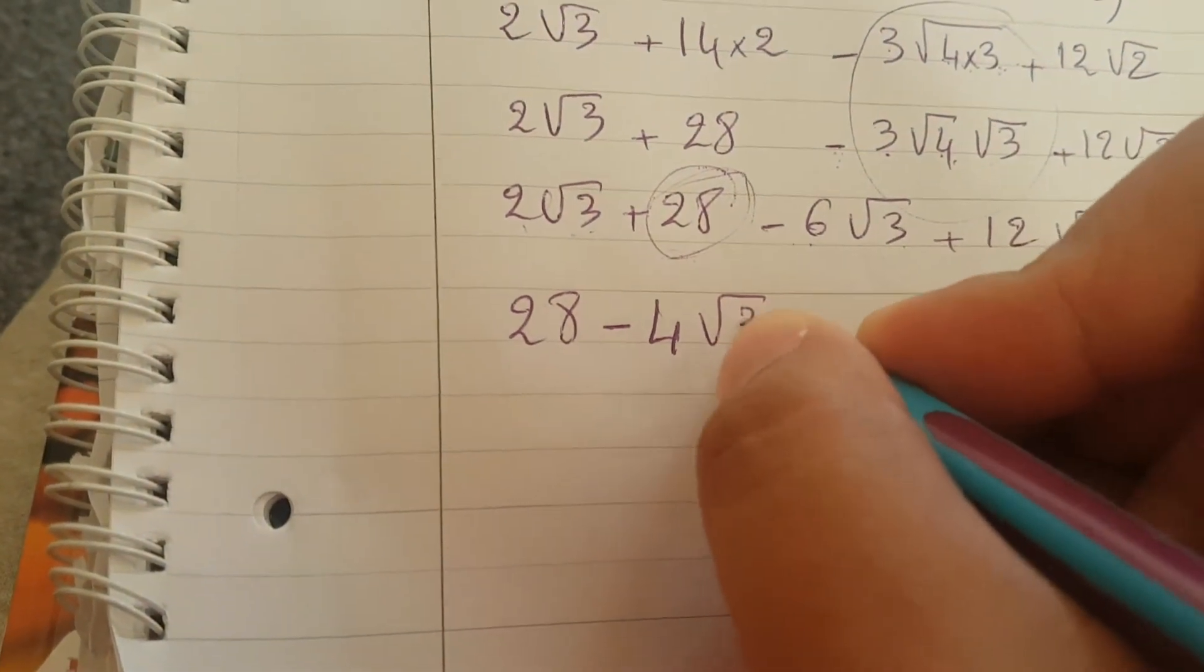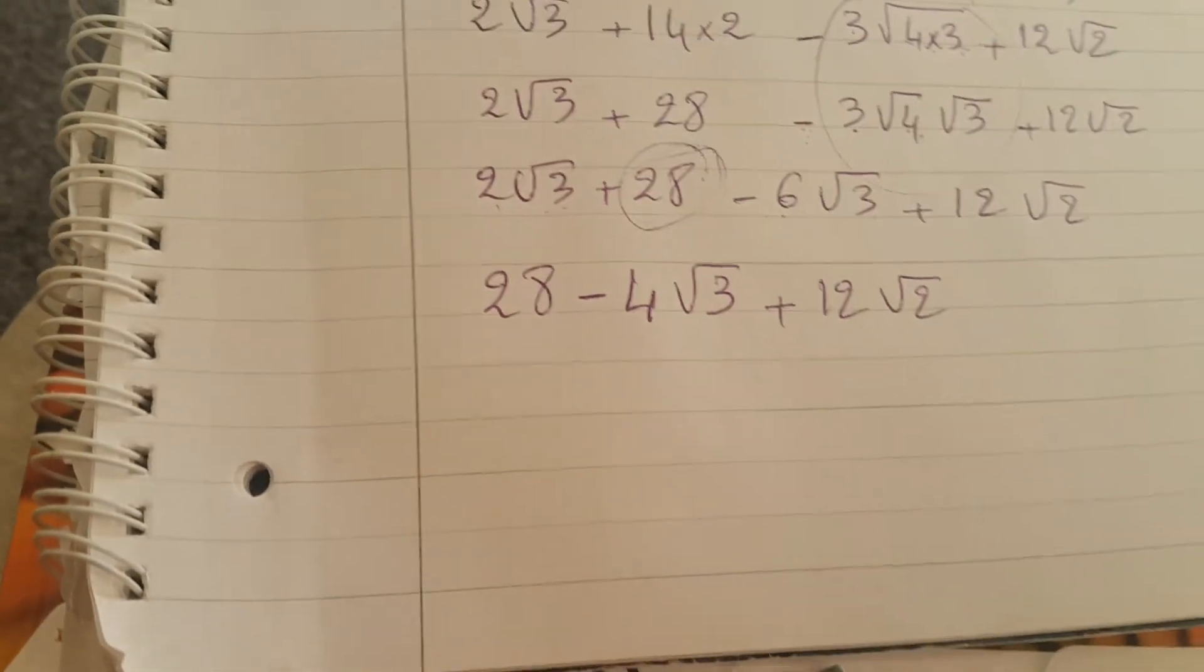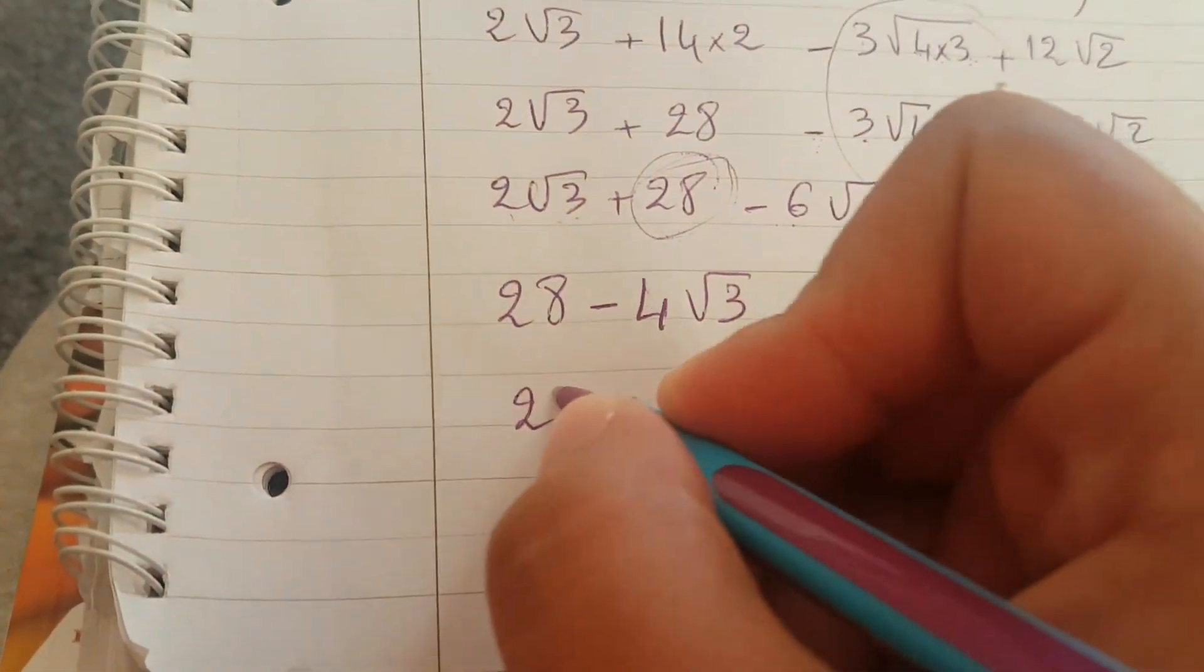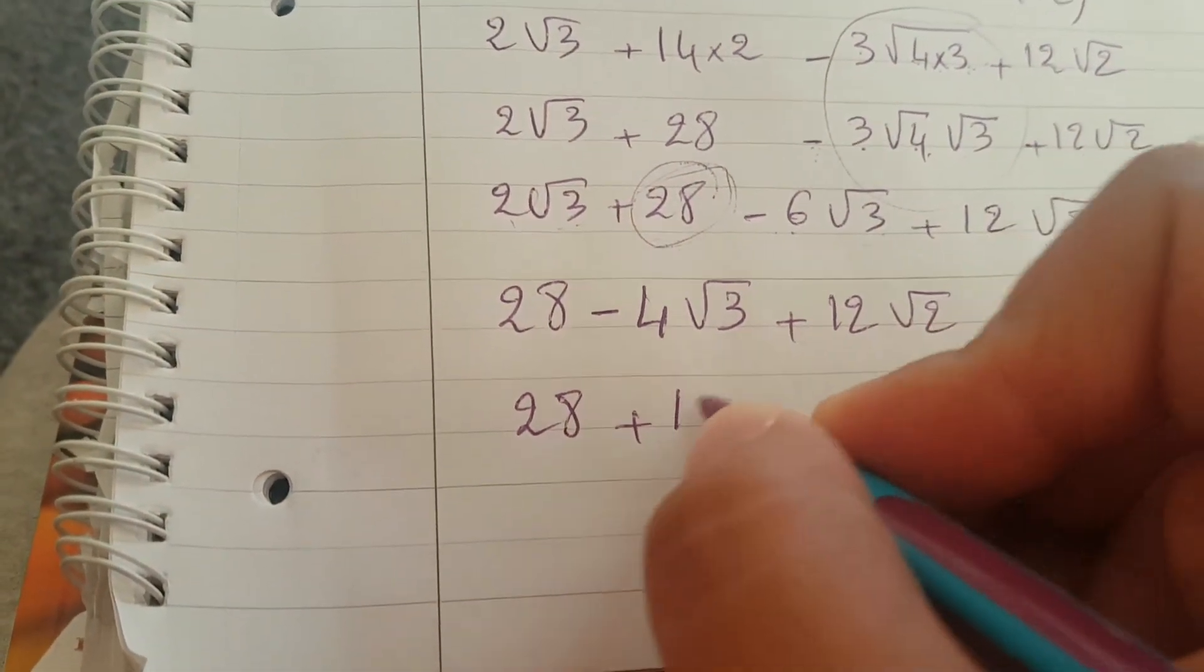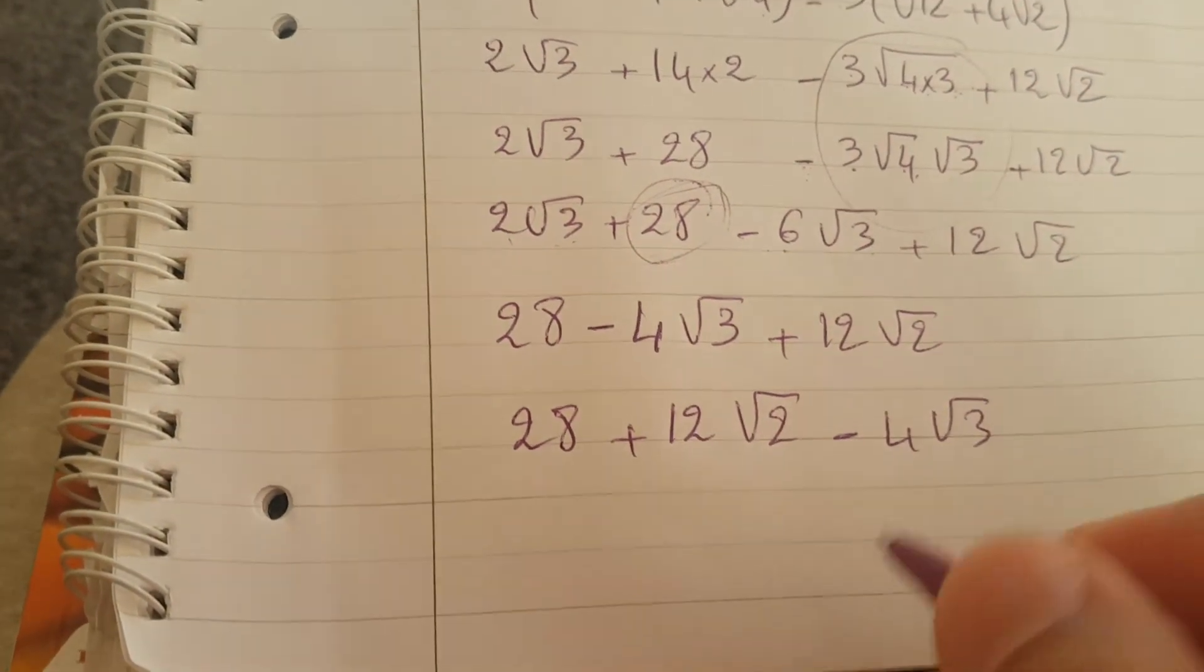Plus 12 square root of 2. We'll probably write it better if we do 28 plus 12 square root of 2 minus 4 square root of 3. That's the final answer. We cannot simplify it - you can write it differently a little bit, but we cannot simplify it.